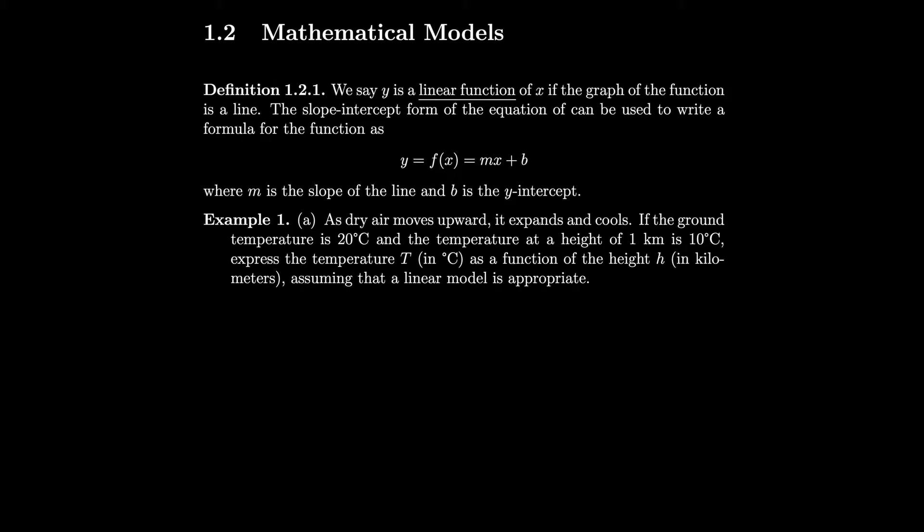I briefly mentioned this in the previous section, but now we actually have the definition. For our first example: as dry air moves upward, it expands and cools. If the ground temperature is 20 degrees Celsius and the temperature at a height of 1 kilometer is 10 degrees Celsius, express the temperature T in degrees Celsius as a function of height h in kilometers, assuming that a linear model is appropriate.